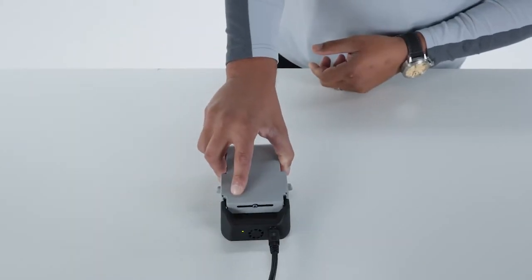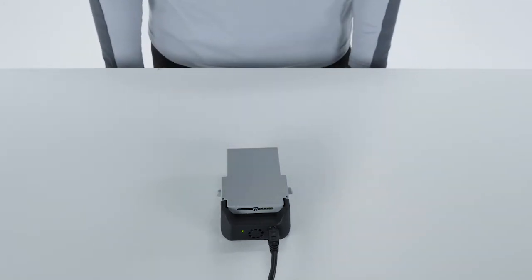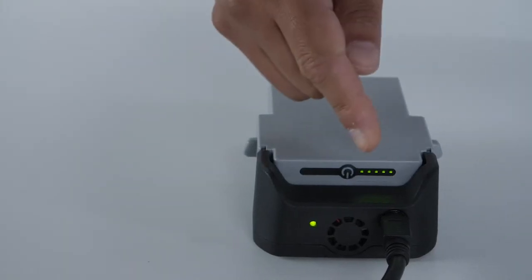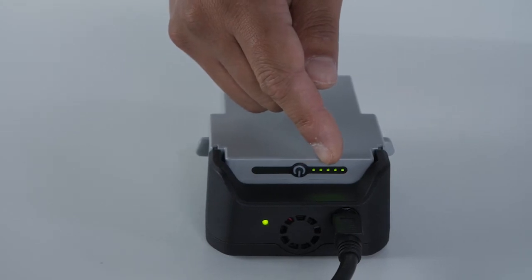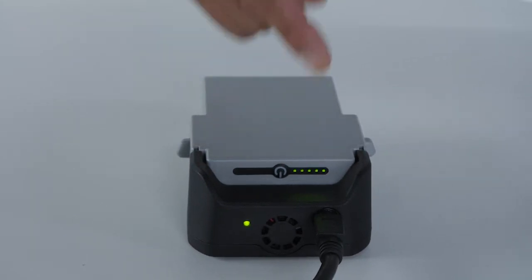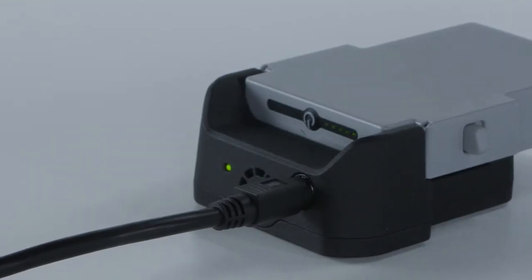To charge, plug everything together and install your battery. You will know that the battery is fully charged once all the lights in the performance battery turn solid green. If they are blinking, they are charging. Usually it will take a little over one hour to fully charge a battery.